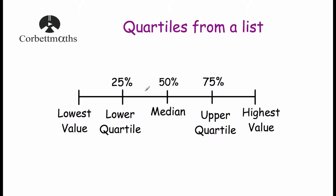So first of all, what are the lower quartile and upper quartile? Well, if we had a list of data in order from our lowest value to highest value, you may know that our median represents our middle point — the point where 50% of the data lies beneath it and 50% lies above it. Our lower quartile is the point where 25% of the data lies beneath it and 75% above it, and our upper quartile represents the point where 75% lies beneath and 25% lies above. So our lower quartile is a quarter of the way through the data and our upper quartile is three quarters of the way through.